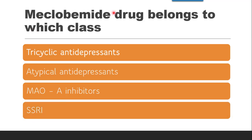Next question: Meclobamide drug belongs to which class — tricyclic antidepressant, atypical antidepressant, MAO-inhibitors, or SSRI? Meclobamide belongs to MAO-inhibitors. The correct answer is MAO-inhibitors.